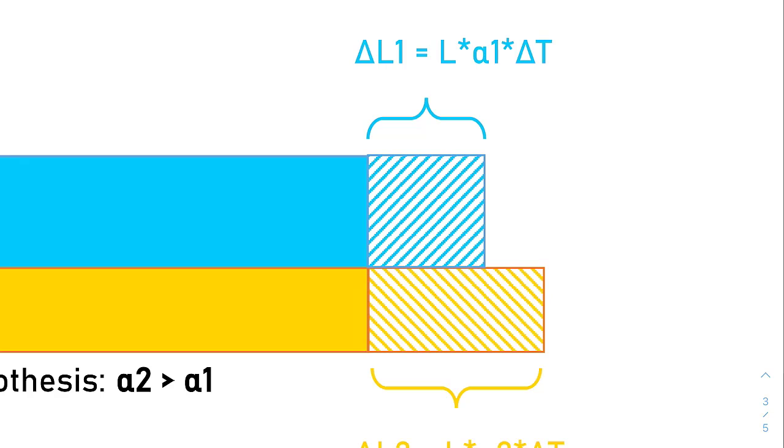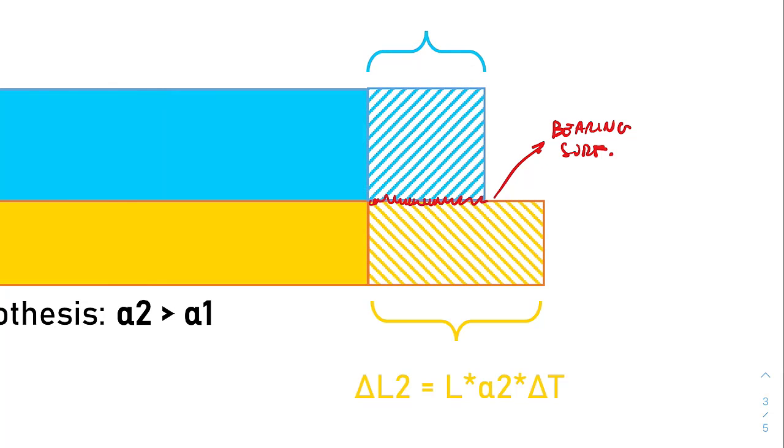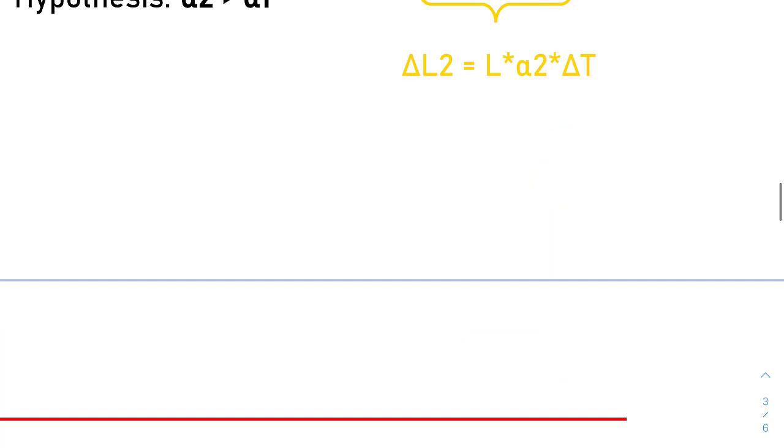The point is this one. In the actual system, all the forces are exchanged over this surface that will be called bearing surface. In this particular case, the orange metal put in traction the blue one, because it will pull the blue layer and ask it to elongate more. Instead, the blue layer will push back the orange layer. This will result in a true deformed configuration that will have this shape.